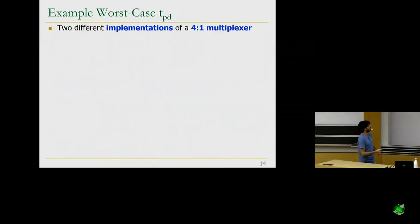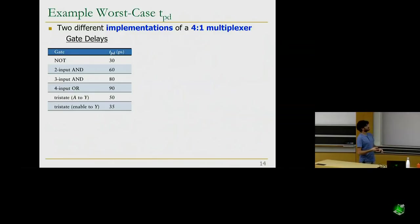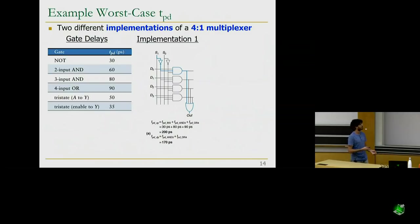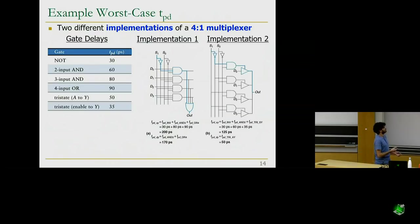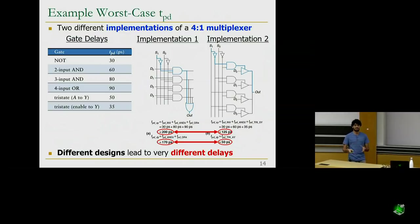For an academic example, consider two implementations of a four-to-one multiplexer. Using example gate delays — NOT gate 30 picoseconds, etc. — Implementation 1 uses AND gates feeding an OR gate. We compute propagation delay from S input to output and from D input to output. Implementation 2 uses tri-state buffers, so D no longer goes through two gates but just one tri-state buffer. The values are significantly smaller in both cases. The takeaway: different designs for the same function can have completely different delays.